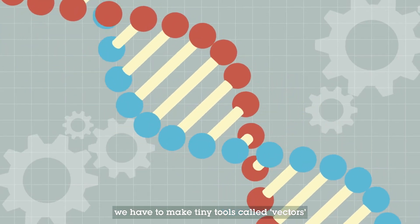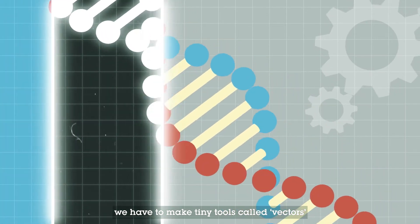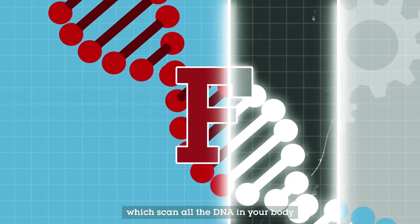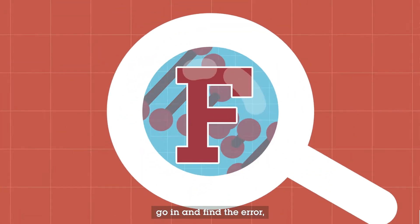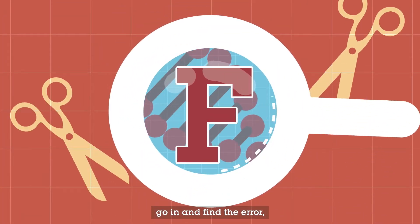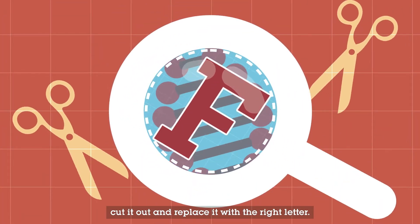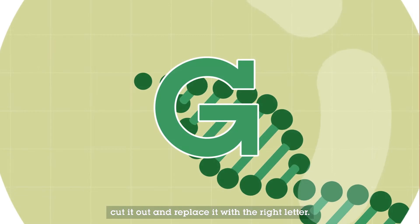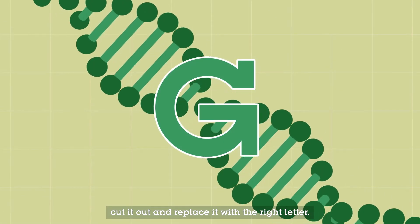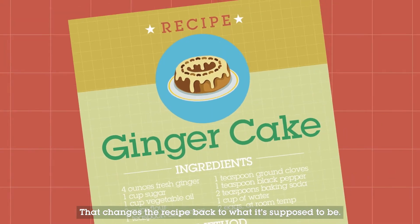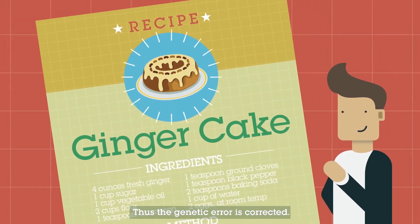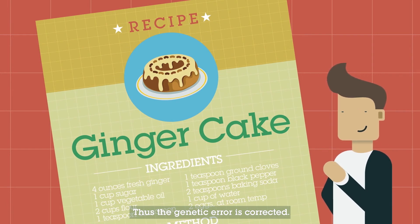To fix it, we have to make tiny tools called vectors which scan all the DNA in your body, go in and find the error, cut it out and replace it with the right letter. That changes the recipe back to what it's supposed to be. Thus, the genetic error is corrected.